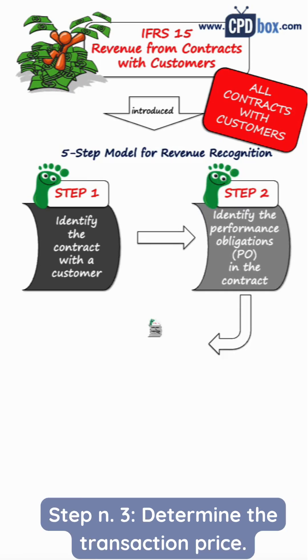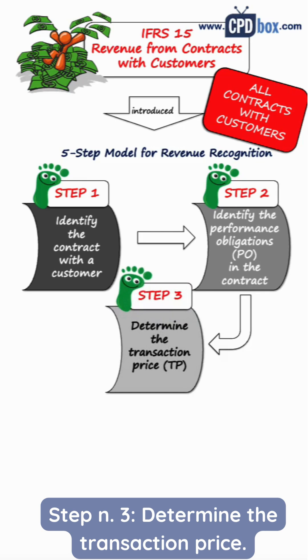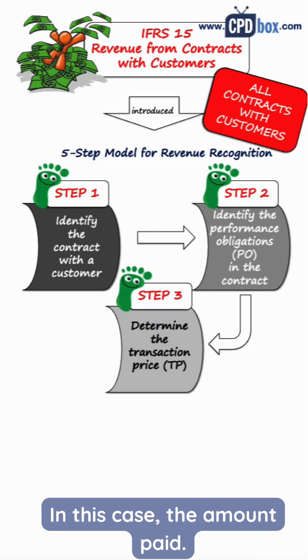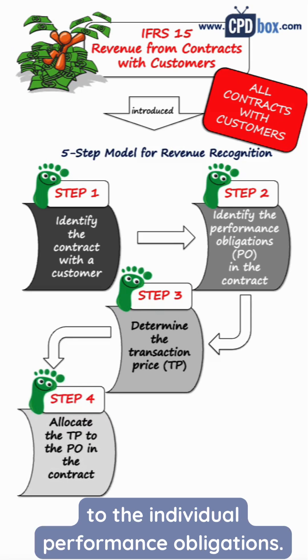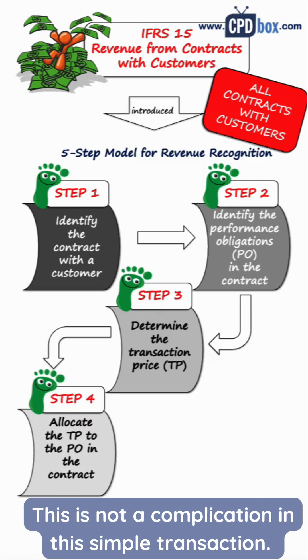Step number three: determine the transaction price — in this case, the amount paid. Step number four: allocate the transaction price to the individual performance obligations. There are no complications in this simple transaction.